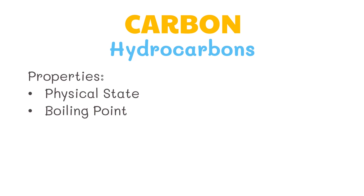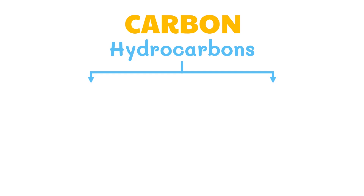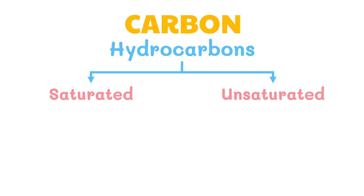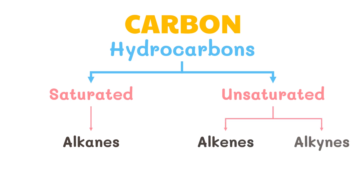The simplest and most commonly encountered class of organic compounds are the hydrocarbons. The structures of hydrocarbons affect their properties such as their physical state and boiling point. There are two types of hydrocarbons: saturated and unsaturated. Saturated hydrocarbons are called alkanes, while unsaturated hydrocarbons are further classified into alkenes and alkynes.